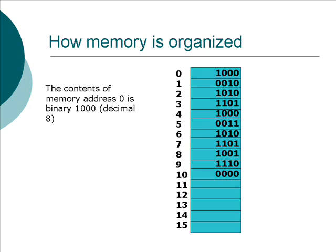We think of memory as a bunch of contiguous storage cells. Contiguous means they're all together and numbered consecutively. In our imaginary computer we're using 4-bit memories, so each memory contains 4 bits. In real modern computers they use 8-bit memories, or what are called one byte. In the diagram we have 16 memory locations numbered from 0 to 15. In a real computer there can be gaps, but for simplicity we assume contiguity. The contents of memory location 0 is 1000, which is binary for 8, and the contents of memory location 10 is just 0.